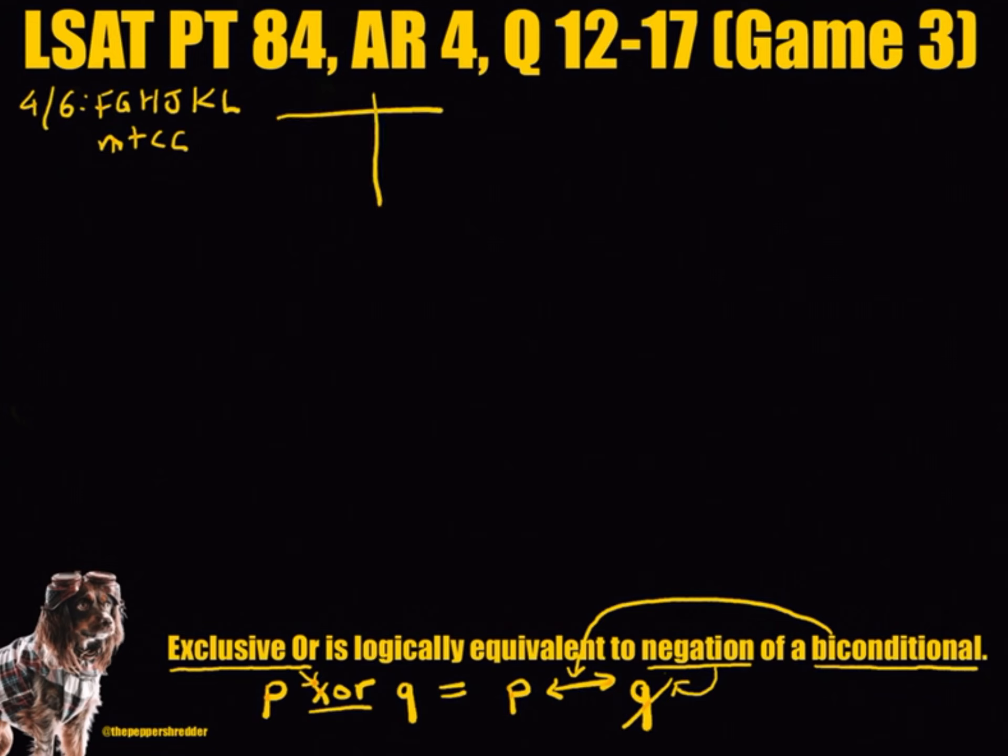The rules are as follows. Rule 1: If F is in, then G must be out. Rule 2: If H is grouped with C, then J must be grouped with M.